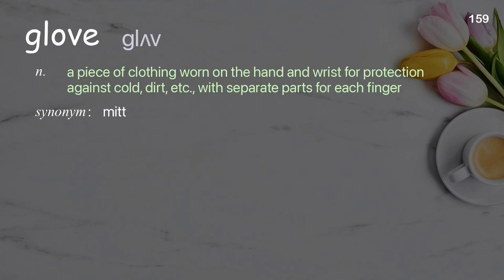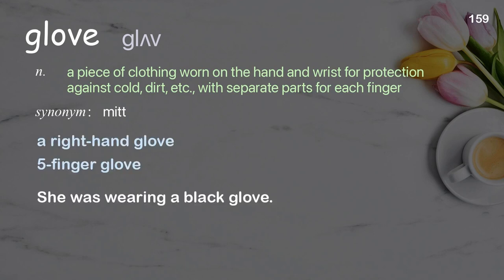Glove. A piece of clothing worn on the hand and wrist for protection against cold, dirt, etc., with separate parts for each finger. Examples: a right-hand glove, five-finger glove. She was wearing a black glove.